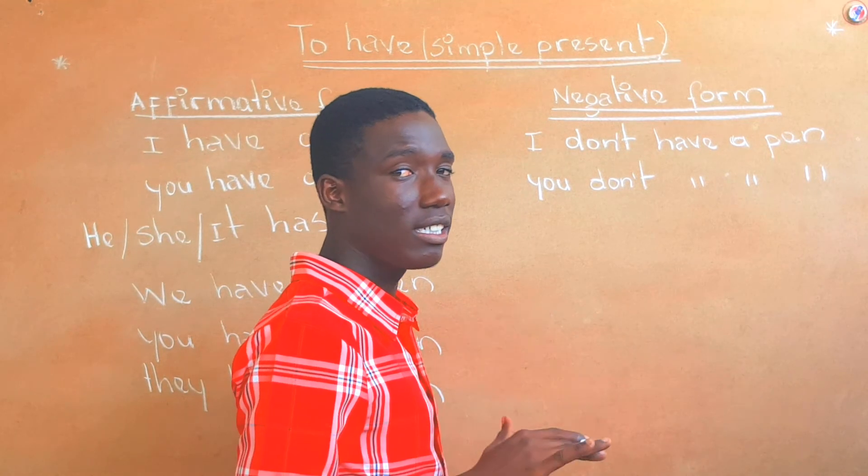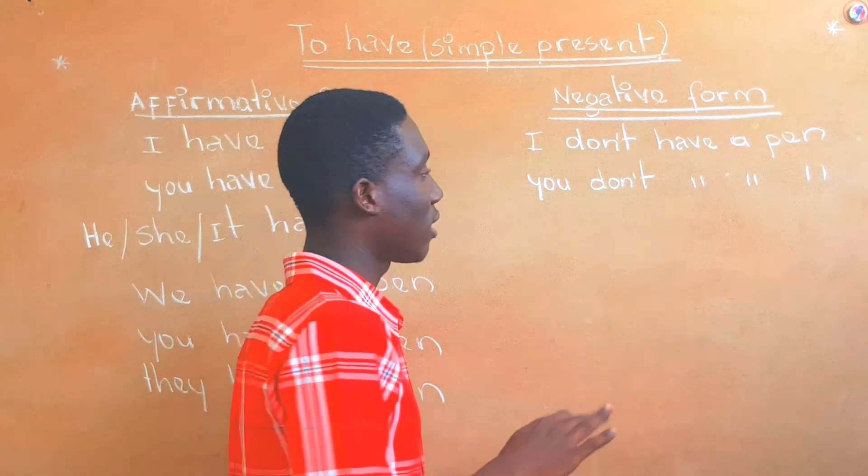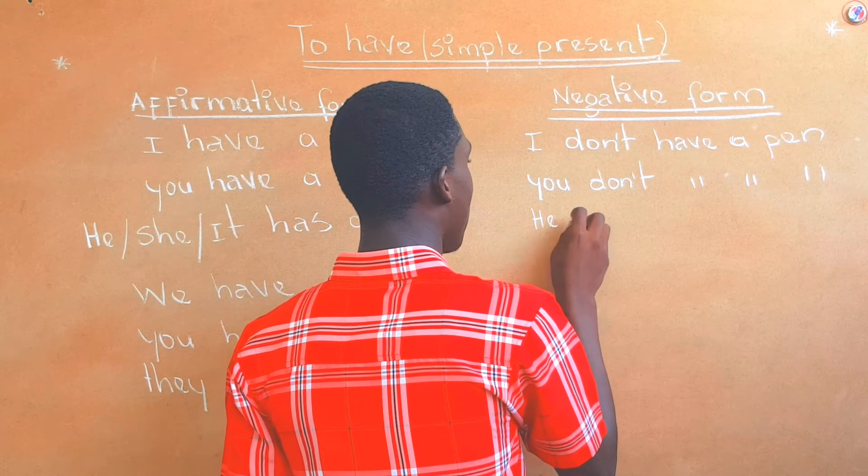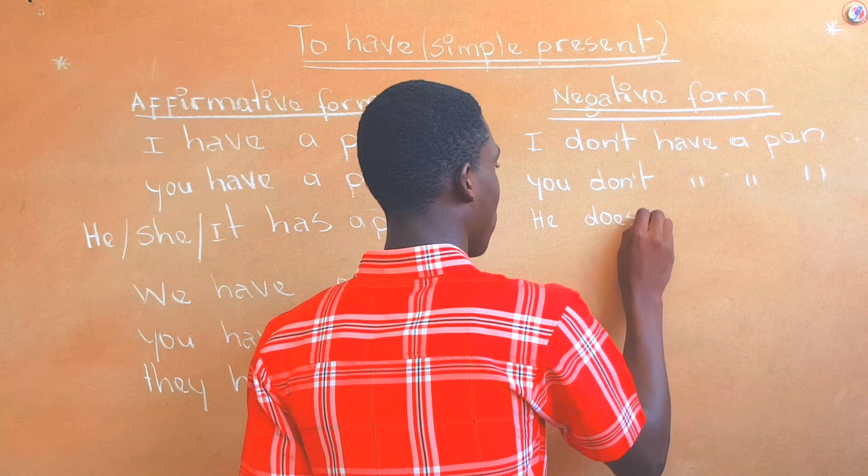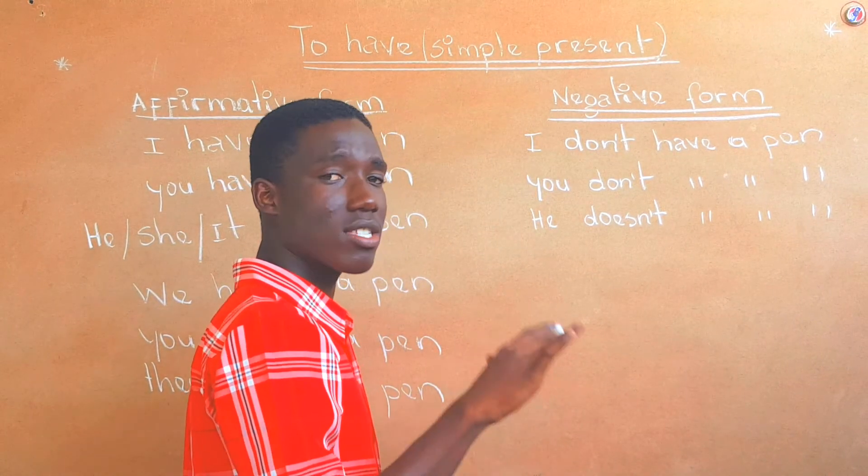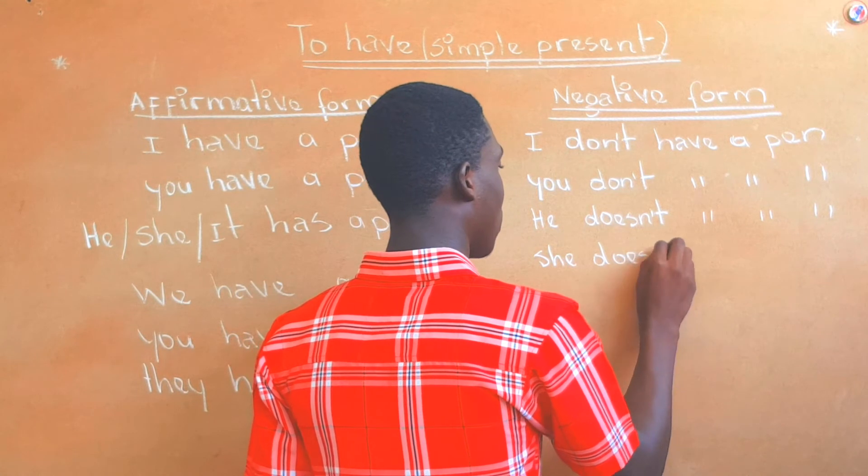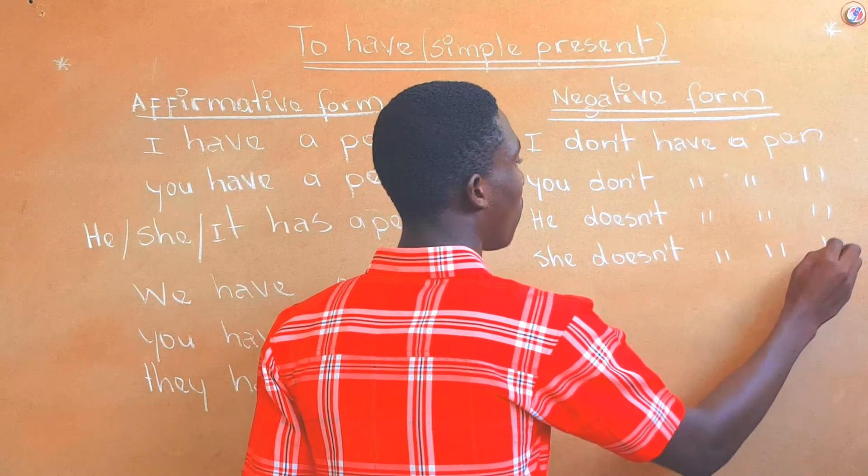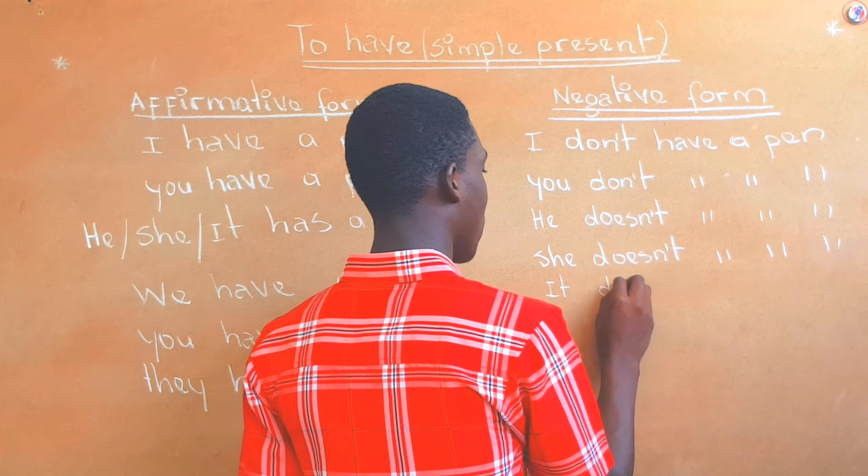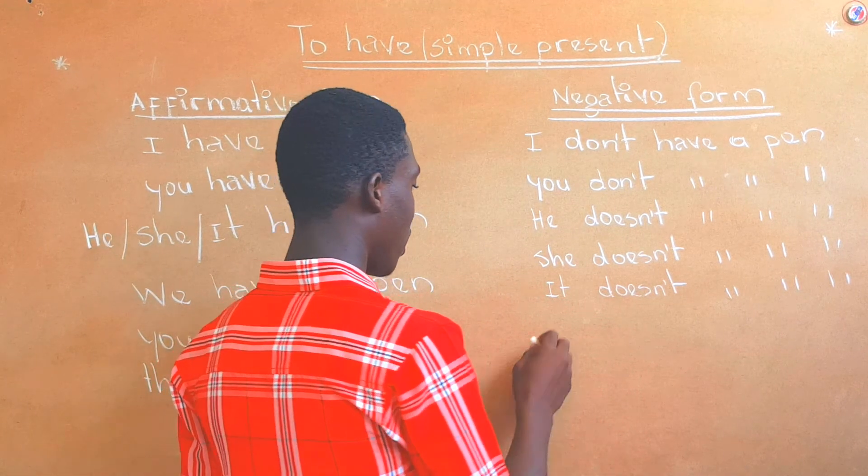And for he, she, it, it's not don't, it's doesn't. For she, he, and it: he doesn't have a pen, she doesn't have a pen, and it doesn't have a pen.